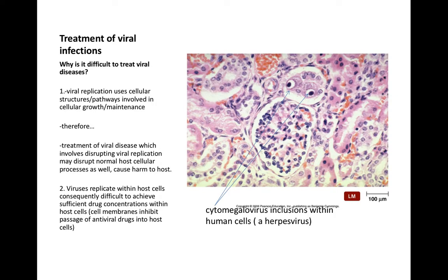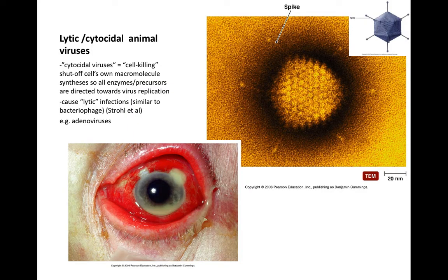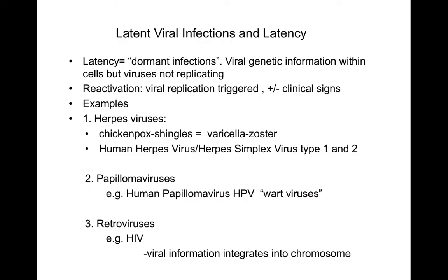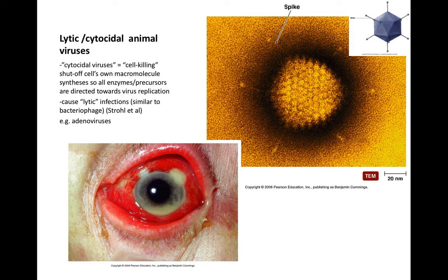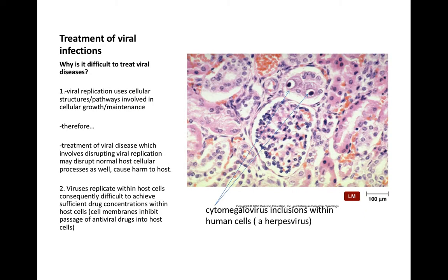We'll stop there. The next audio will be on treatment of viral infections and why they're so hard to treat. Then we'll back off from so many details and start looking at different types of viral infections — lytic or cytocidal animal viral infections, latent viral infections, and viral infections that can lead to increased risk for cancer, the so-called oncogenic viruses.